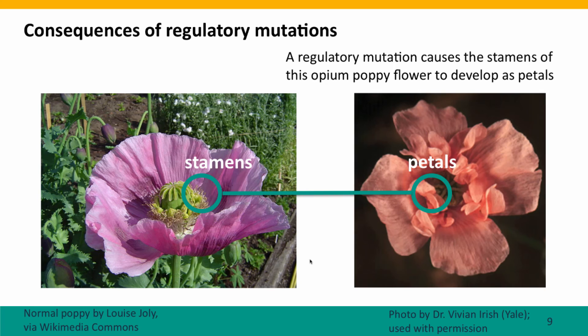Now I want to show a few more examples of regulatory mutations — but this is a different kind. These are mutations that cause one kind of tissue to develop into a different kind of tissue. These are developmental mutations that occur when the embryo or a part of the organism is developing. The examples are from plants, but similar mutations occur in animals as well. We like these mutations in plants because they often make the flowers look prettier, but we consider them serious problems when they happen in animals.